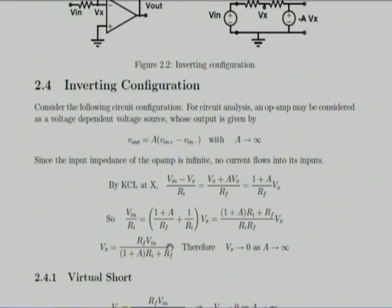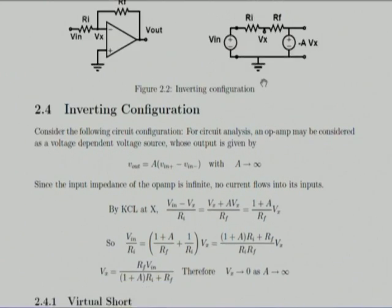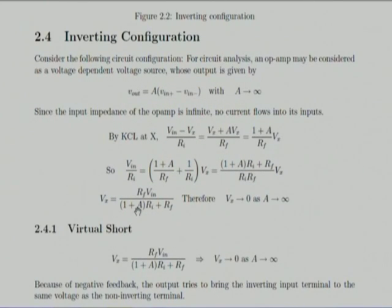After solving you will get an expression for Vx which has a term inside. And what happens as A goes to infinity? Vx goes to 0 — voila. Now you say that in case of an op amp you will have a virtual ground. Even though this terminal is not connected to ground, as the gain goes to infinity this voltage comes down to 0. The students themselves derive the value of Vx in the non-ideal case and then take the limit as A goes to infinity.